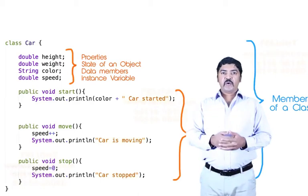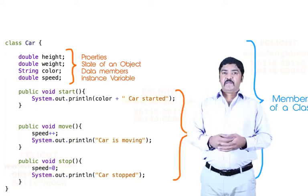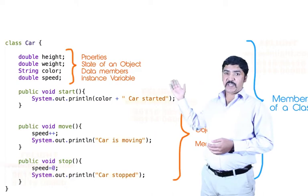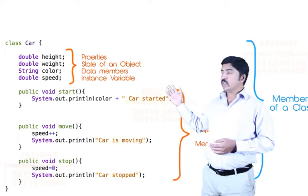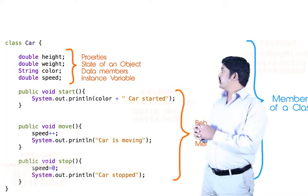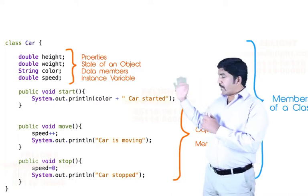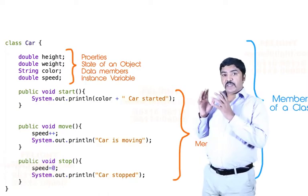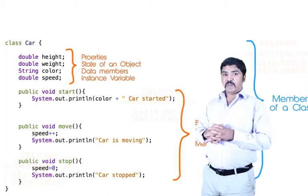As you've written in your notebook, the last example I gave in the notes is our class Car. It has properties like height, weight, color, and speed. These properties are called the state of the object or data members. Remember this - they'll ask you this question in the interview.